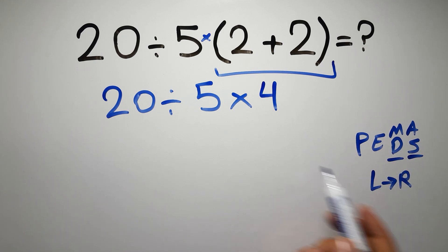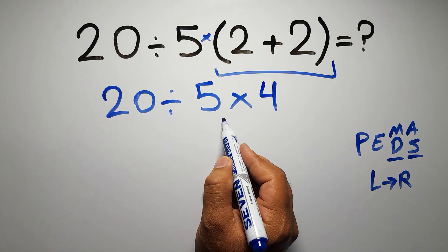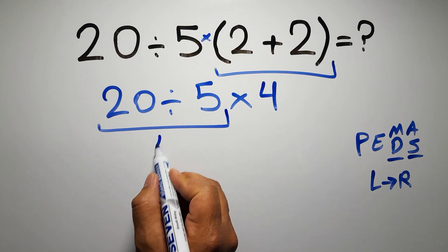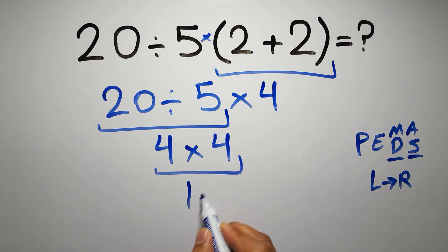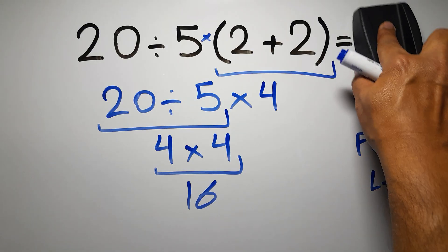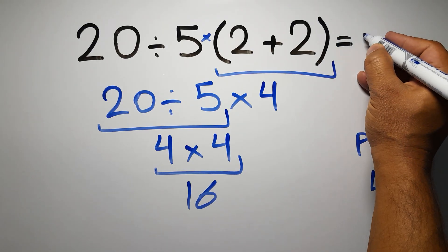left to right. So here first we have to do this division. 20 divided by 5 gives us 4, so 4 times 4 is just 16, and this is our final answer to this problem. The correct answer is